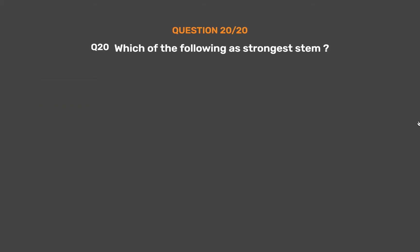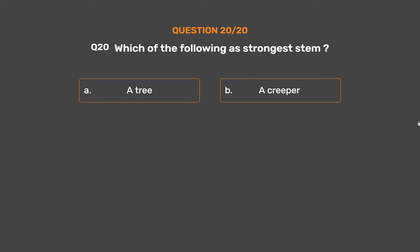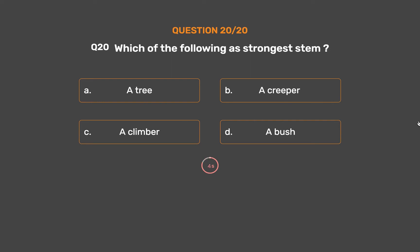Question number 20. Which of the following has the strongest stem? Option A: A tree. Option B: A creeper. Option C: A climber. Option D: A bush. The correct answer is Option C: A climber.